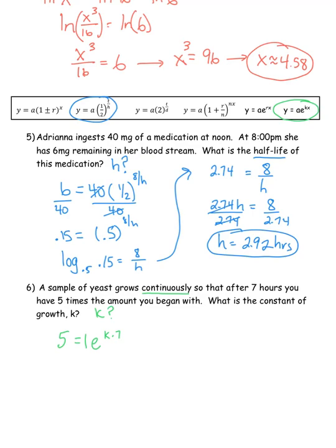Does the k times 7 apply to the 1? No — dividing it out just makes it disappear since 1 times anything is itself. Now I need a logarithm because k is in the exponent. Log base e of 5 equals k times 7 — and I like log base e because I have the ln button. Pressing ln then 5 gives 1.609. Dividing by 7 gives k ≈ 0.2299.